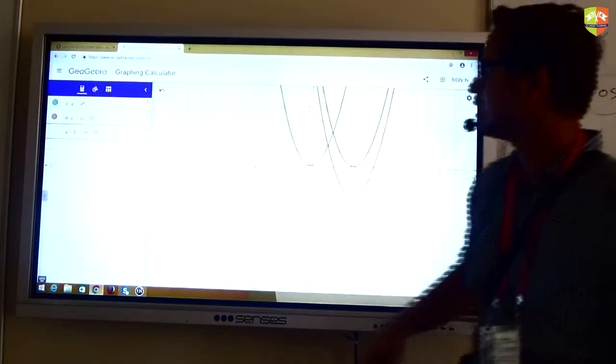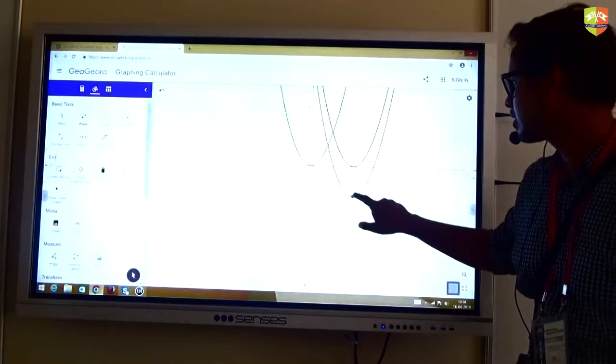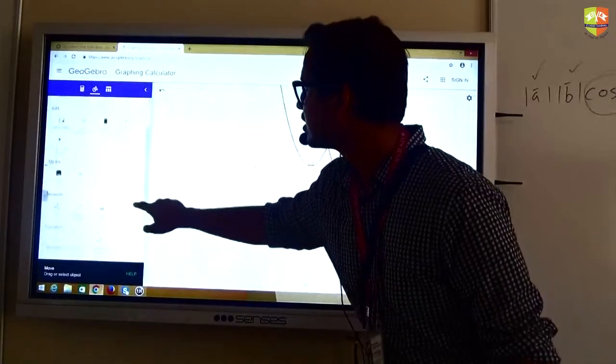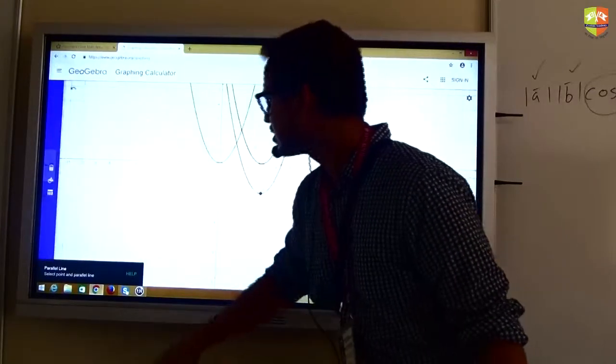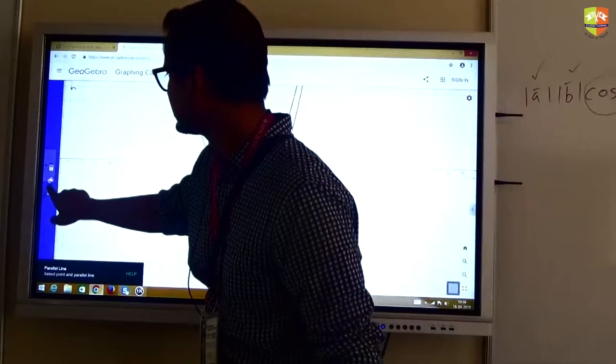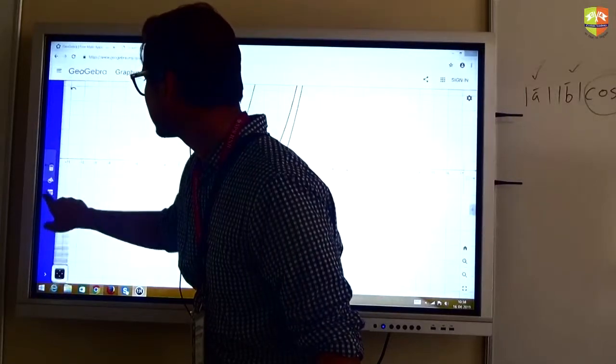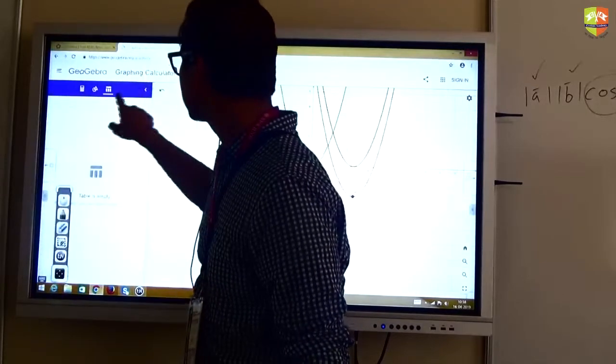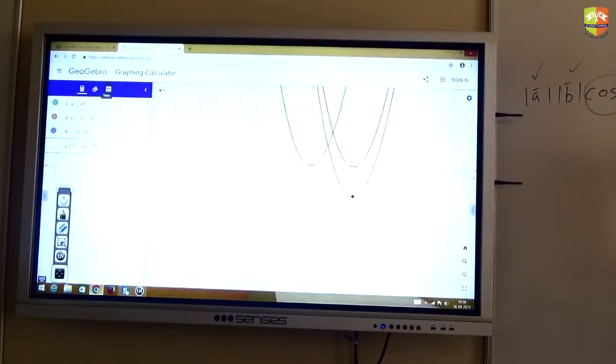You see that it has now come down by 2 units. Now this is the new position of the vertex. There are a lot of tools that you can use on this graph. We can hit the table at the top.